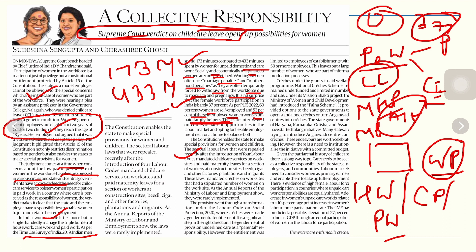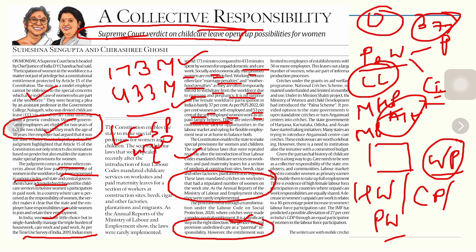These laws mandated crèches on work sites in sectors like bidi, cigarette and other factories, plantations, and migrant worksites that had a stipulated number of women in the workforce. Under the Labor Code on Social Protection of 2020, crèches were made a gender-neutral entitlement, seen as a significant step for women's empowerment. The gender-neutral provision underlined care as a parental responsibility. However, the entitlement was limited to organizations with greater than 50 women employees, leaving out many women in the informal workforce.